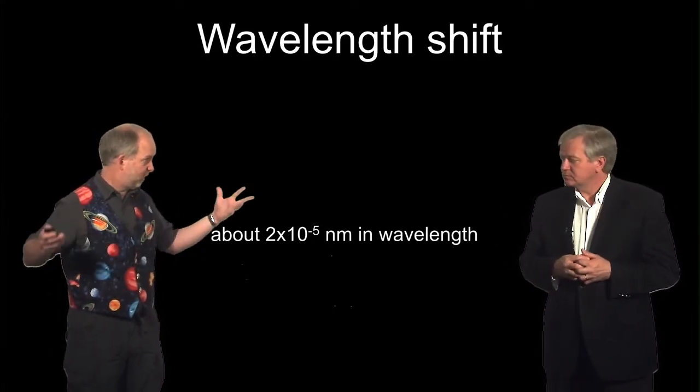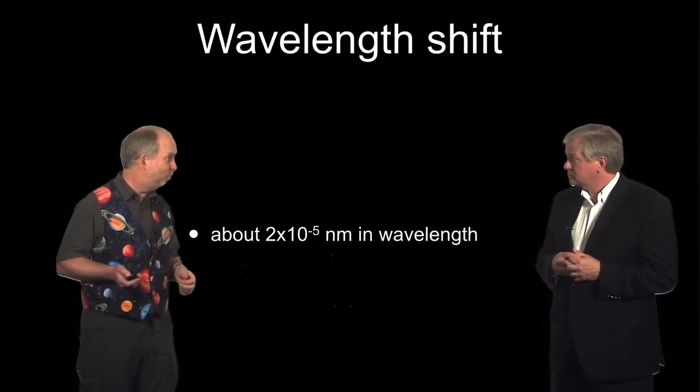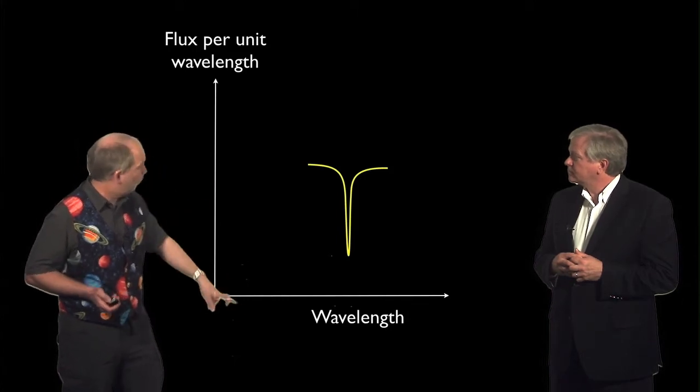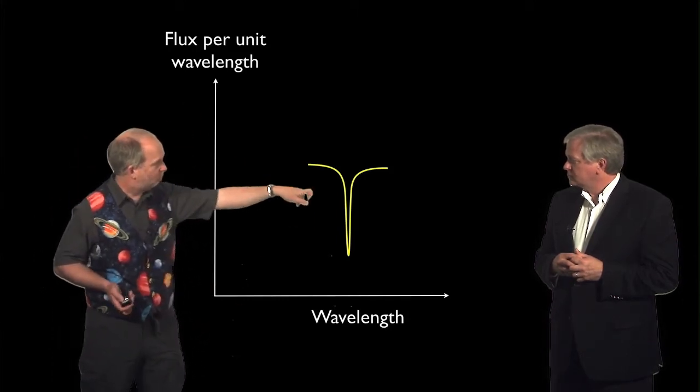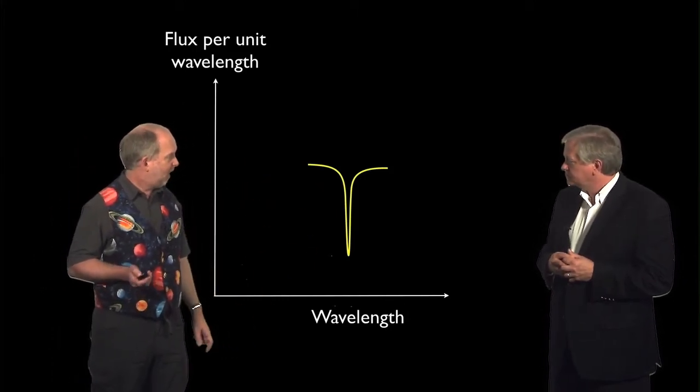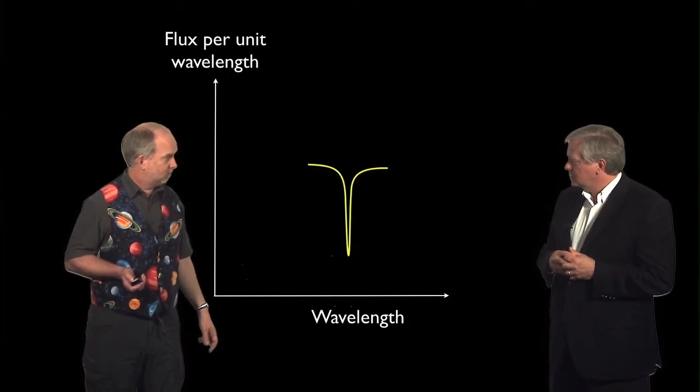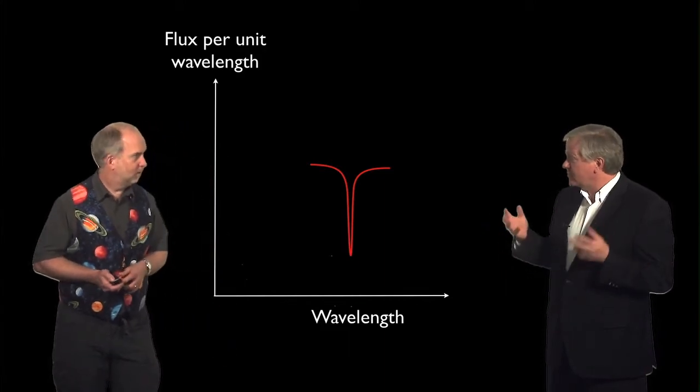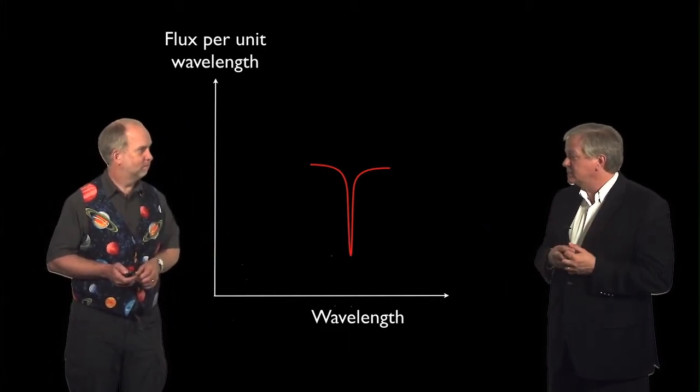But in principle you could put a really big spectrograph—these things typically weigh tons and are the size of rooms—which can measure this sort of stuff. So you might see a spectrum with wavelength against flux per unit wavelength with, say, an absorption line, and it might move. Okay, so it does shift a bit, and so that should be measurable, as you say, if we get enough light and data.